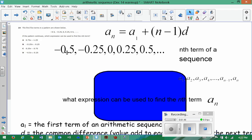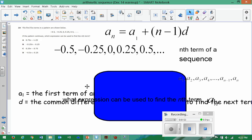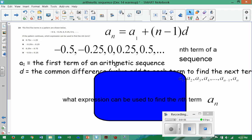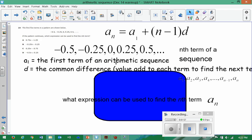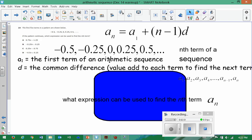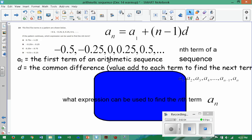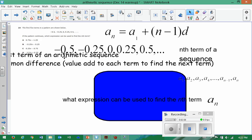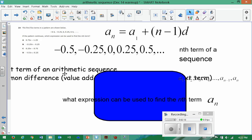This is what's called an arithmetic sequence, an arithmetic sequence. That means that something is being added or subtracted, something is being added from term to term. It could be positive or negative. There's a difference. So a common difference, there's a value added to each term to find the next term.